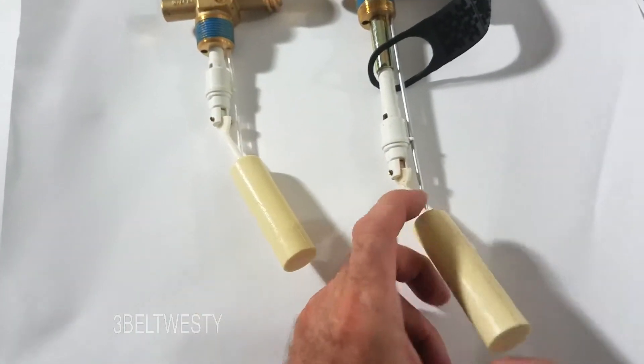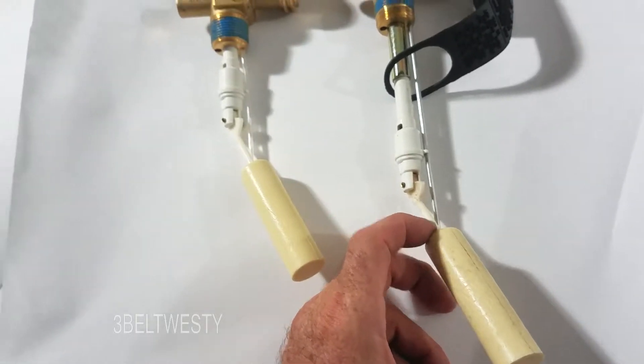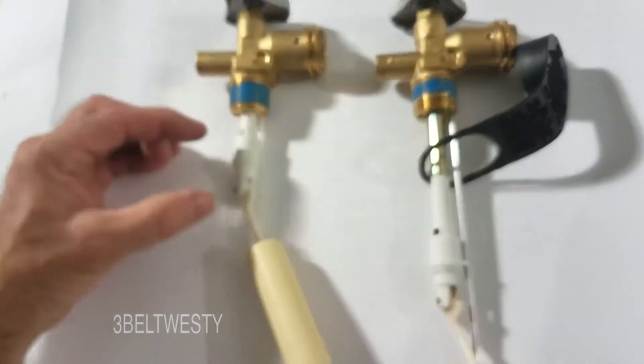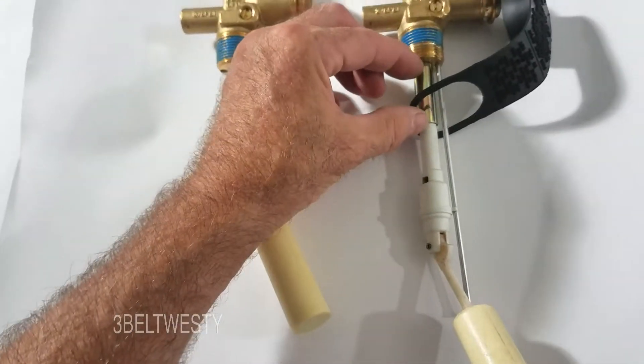This is one for a 20 pound bottle, this is one for a 40 pound. Generally the valve piece here is the same and what they do is put an extension on here.